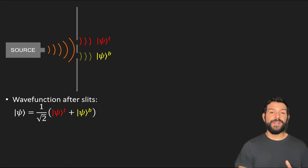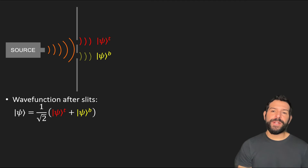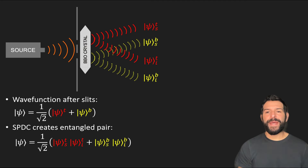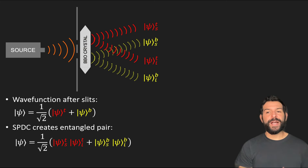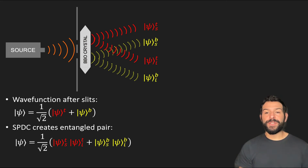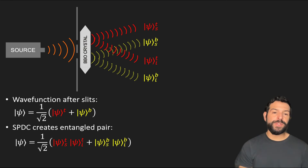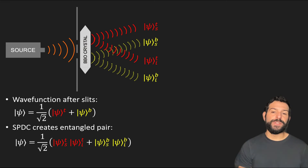So the different colors here denote different branches of the wave function. This is then followed by the generation of the pair of photons via spontaneous parametric down-conversion, which are now described by the following maximally entangled state. Here the subscript s denotes the part of the wave function corresponding to the state of the screen photon, and the subscript i is used for the information photon.